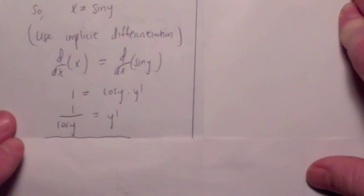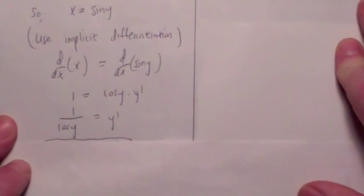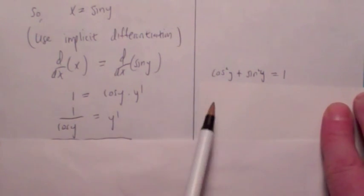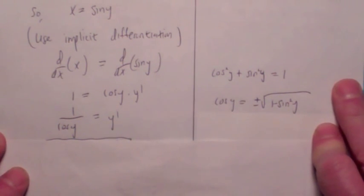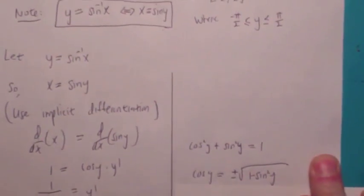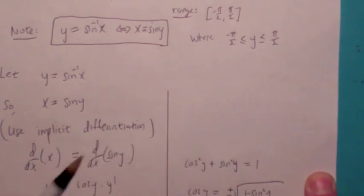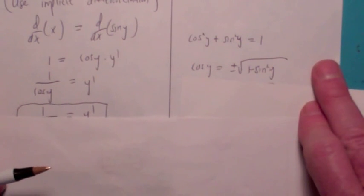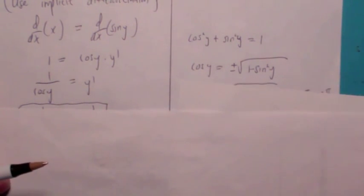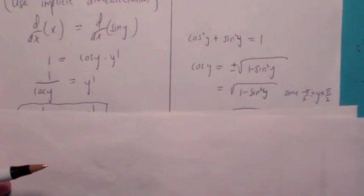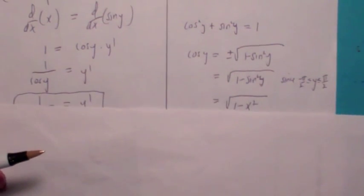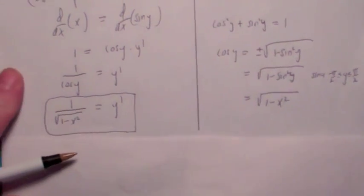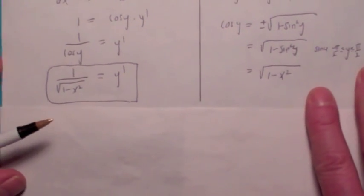The only problem is we want to write this in terms of x. We use the trig identity cos²y + sin²y = 1. Solving for cosine y gives plus or minus the square root of 1 − sin²y. But since y is between −π/2 and π/2, y is in the first or fourth quadrant where cosine is always positive, so cosine y = √(1 − sin²y). Since sin(y) = x, we get cosine y = √(1 − x²), and therefore the differentiation formula for inverse sine is y-prime = 1 / √(1 − x²).